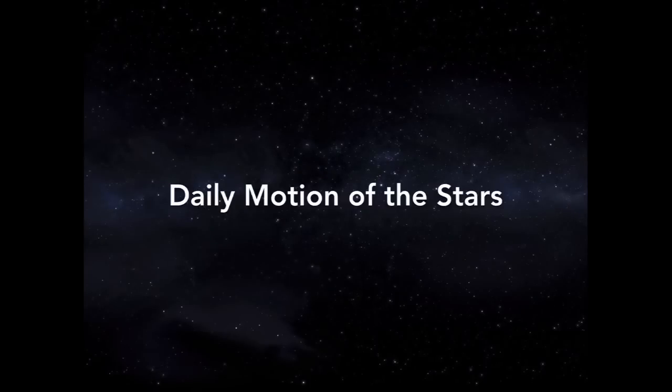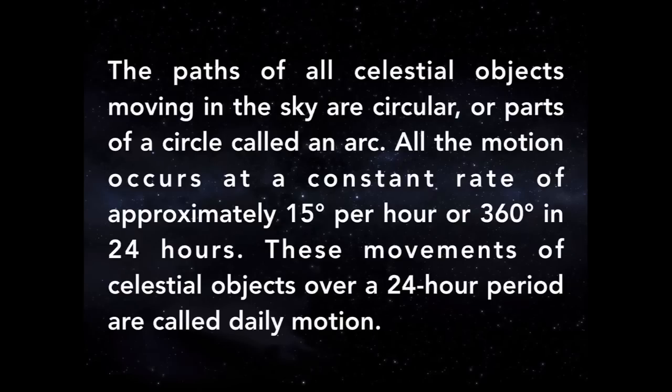Let's start with stars. The paths of all celestial objects moving in the sky are circular, or parts of a circle called an arc. All the motion occurs at a constant rate of approximately 15 degrees per hour, or 360 degrees in 24 hours.